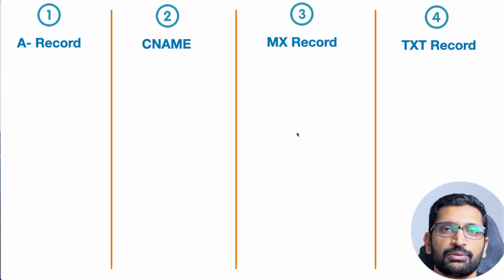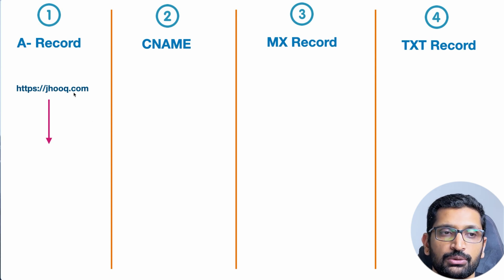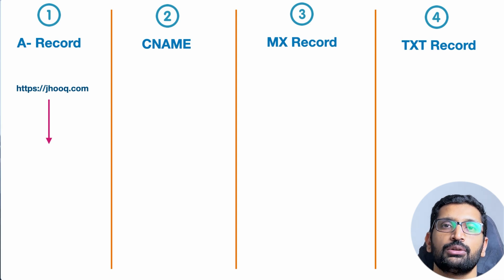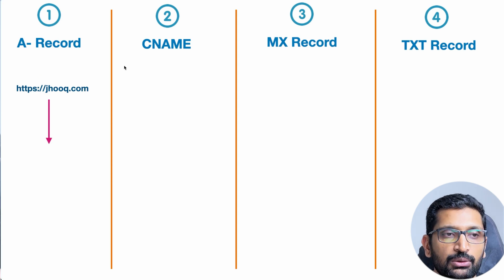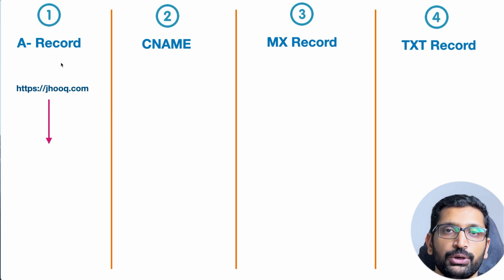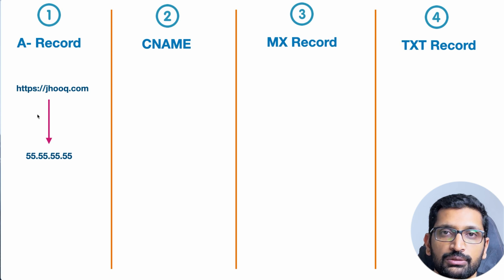Let's start with the A record, which is the most important one. An A record is your domain or website — for example, jhook.com, which is my own blog. An A record is the URL name or domain name of your website which points to the IP address of the server where your application or website is hosted. So this A record will point to the IP address of my server where my web application is running.